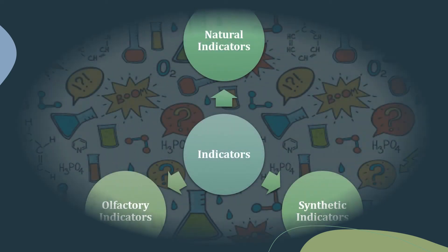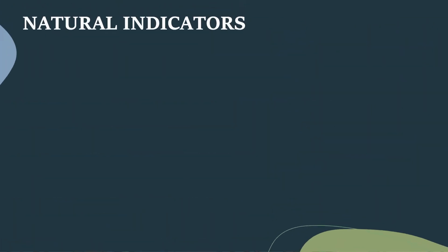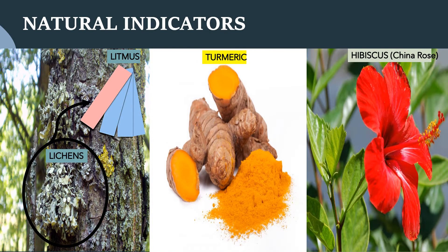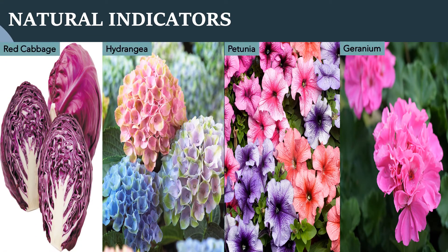Now let's learn about types of indicators: natural indicators, synthetic indicators and olfactory indicators. Natural indicators include litmus, turmeric and hibiscus. There are other natural materials like red cabbage leaves, colored petals of some flowers such as hydrangea, petunia and geranium which indicate the presence of acid or base in a solution. These are called acid-base indicators or simply indicators.